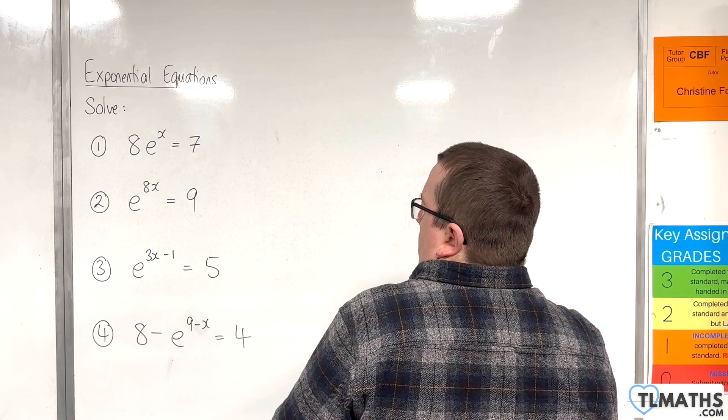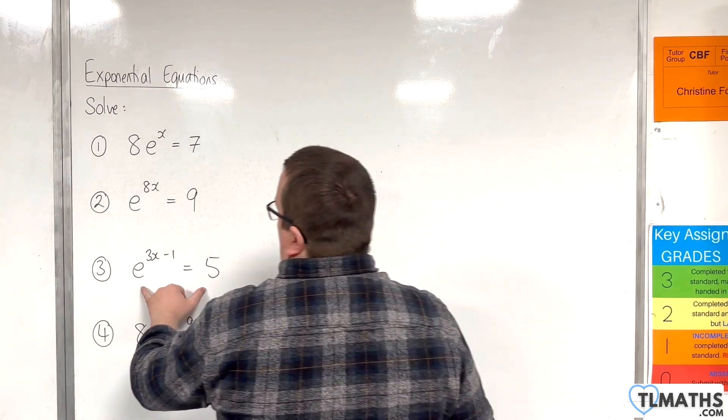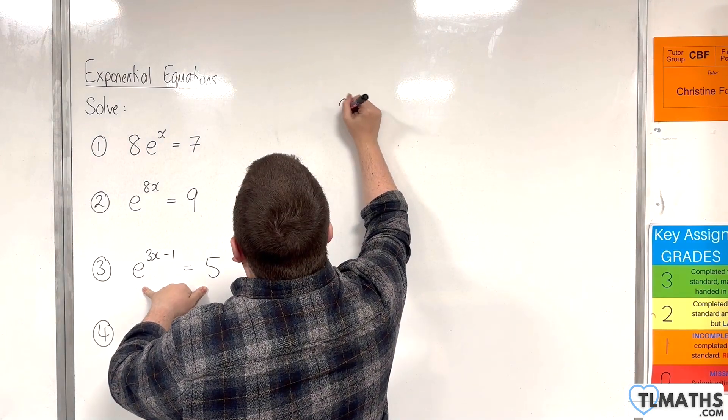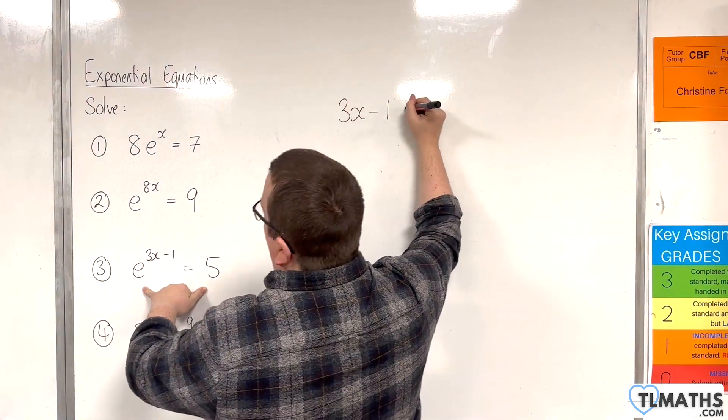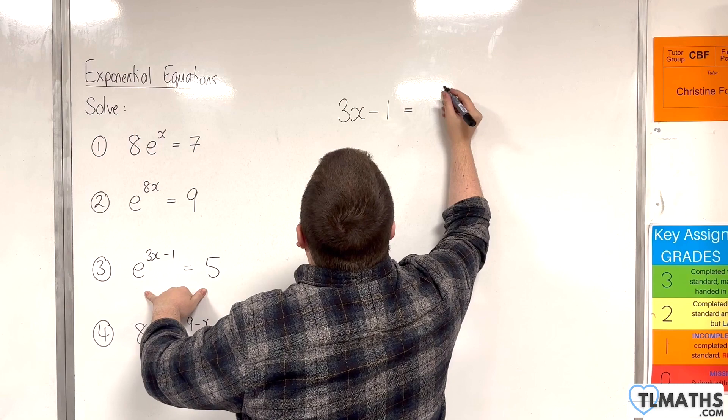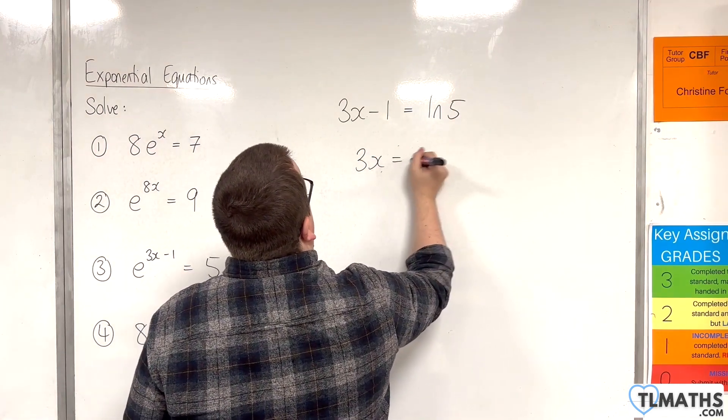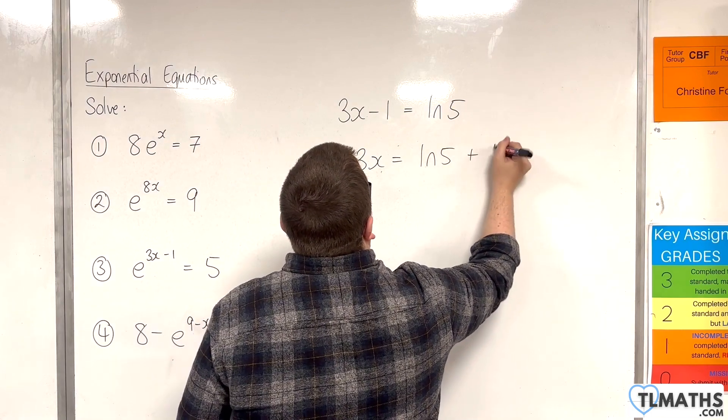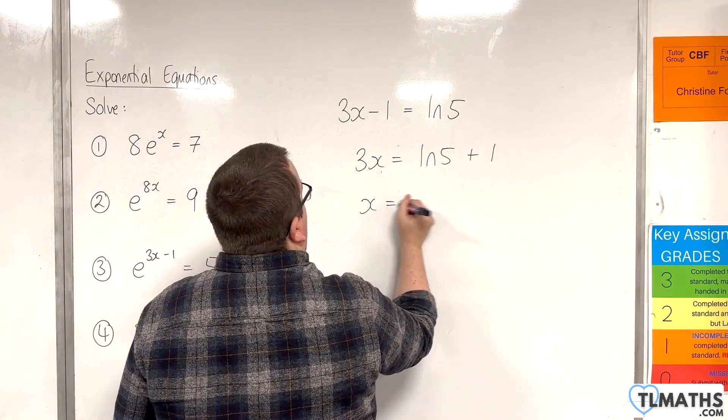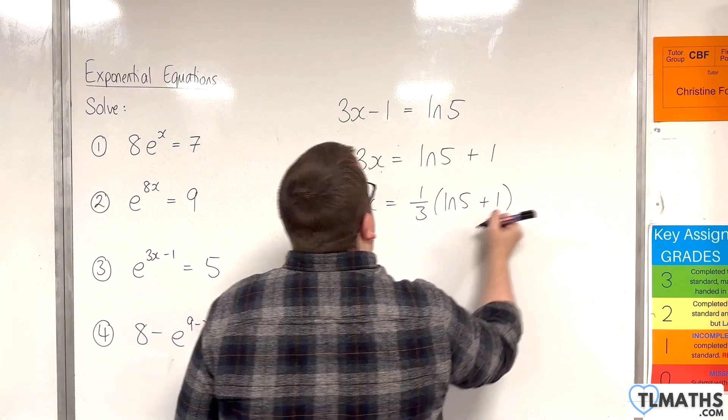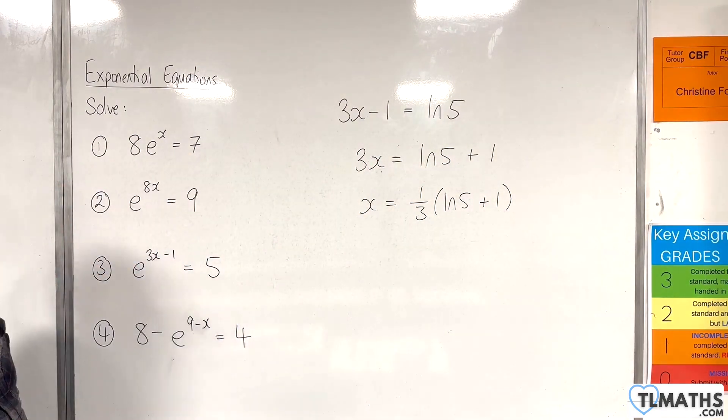Number three: e^(3x-1) = 5. We can go straight from exponential form to logarithmic form. 3x - 1 will be log base e of 5, so ln 5. Add 1 to both sides, then divide through by 3. That is my solution to number three.